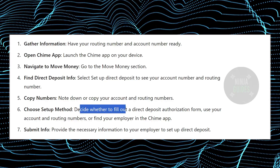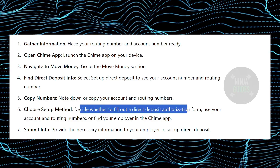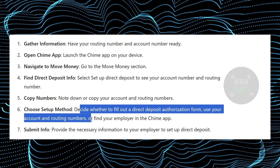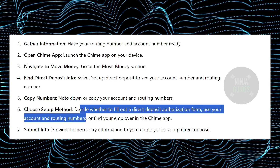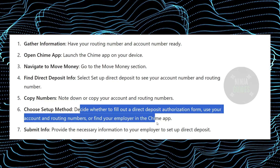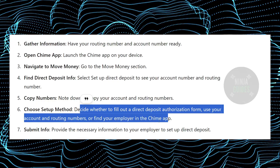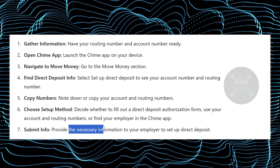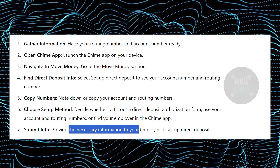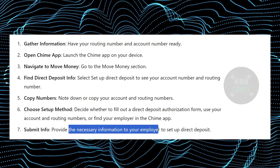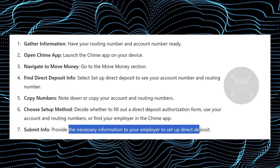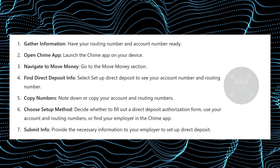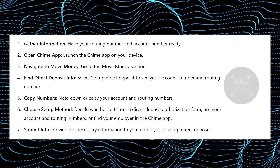Now decide whether to fill out a direct deposit authorization form using your account and routing number, or find your employer directly in the Chime app. Just provide the necessary information to your employer to set up direct deposit for you. That's pretty much it — that's how you'll be able to do it.